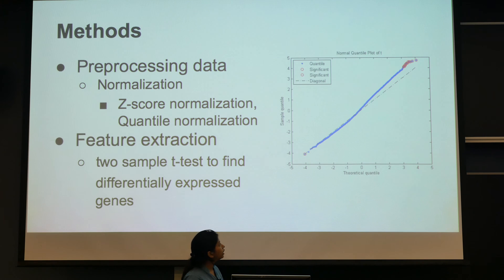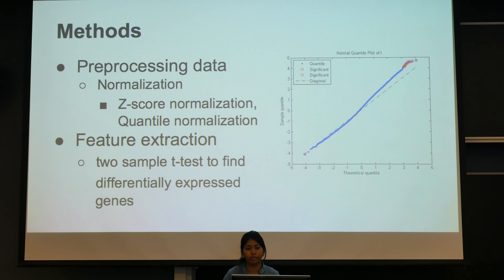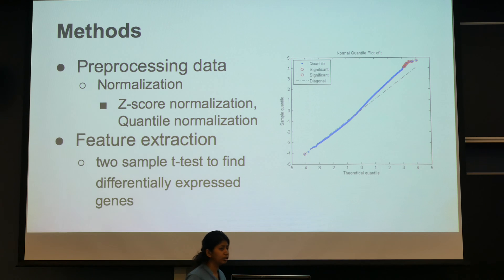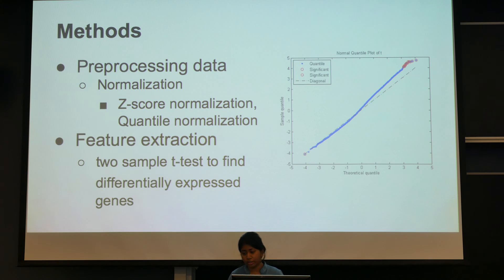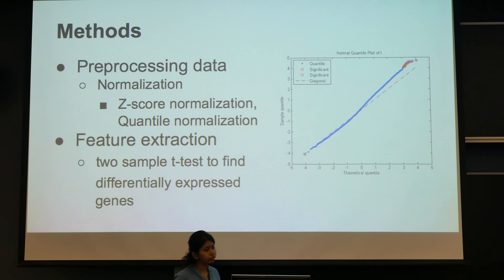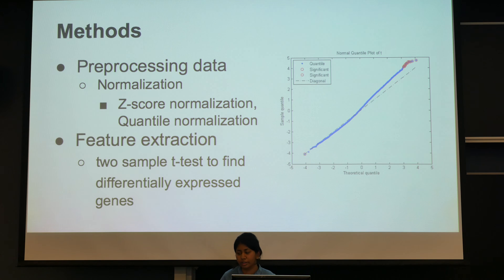The first step is pretty general. When you have the data, you preprocess it and apply a normalization technique. There are a couple of normalization techniques common to gene expression data. We used Z-score normalization, and then we move on to feature extraction.